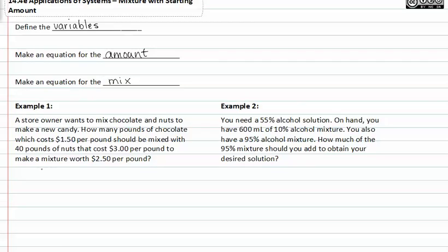Let's look at example one. If a store owner wants to make a candy using chocolate and nuts, how many pounds of chocolate which cost $1.50 per pound should be mixed with 40 pounds of nuts that cost $3.00 per pound?